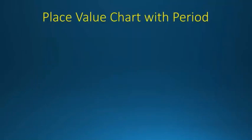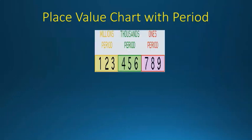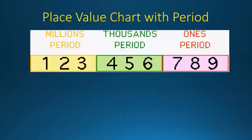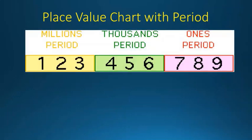Now let's take the decimal chart with periods. We can see there are digits 1 through 9. Digits 1, 2, 3 are in the millions period. Digits 4, 5, 6 are in the thousands period. And digits 7, 8, 9 are in the ones period.